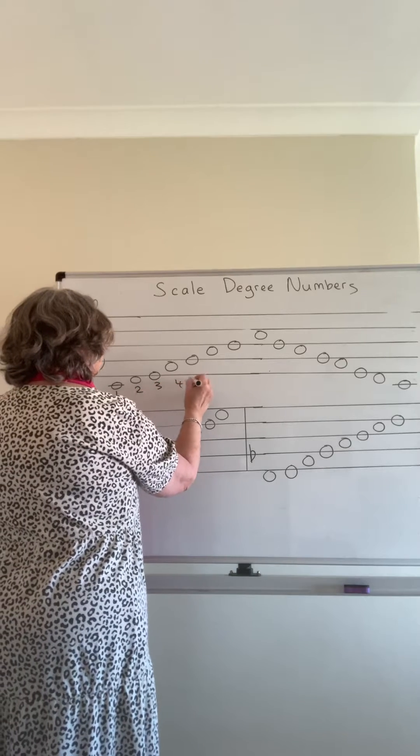So if you start numbering these one, two, three, four, five, six, seven, eight — going upward on a descending scale — you're going to end up with the wrong numbers under the notes.